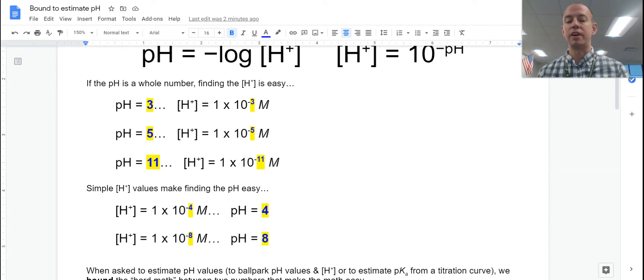And going the other way is just as easy. If I know my hydrogen concentration is 1 × 10^-4, then my pH is 4. If my hydrogen concentration is 1 × 10^-8, it's 8.